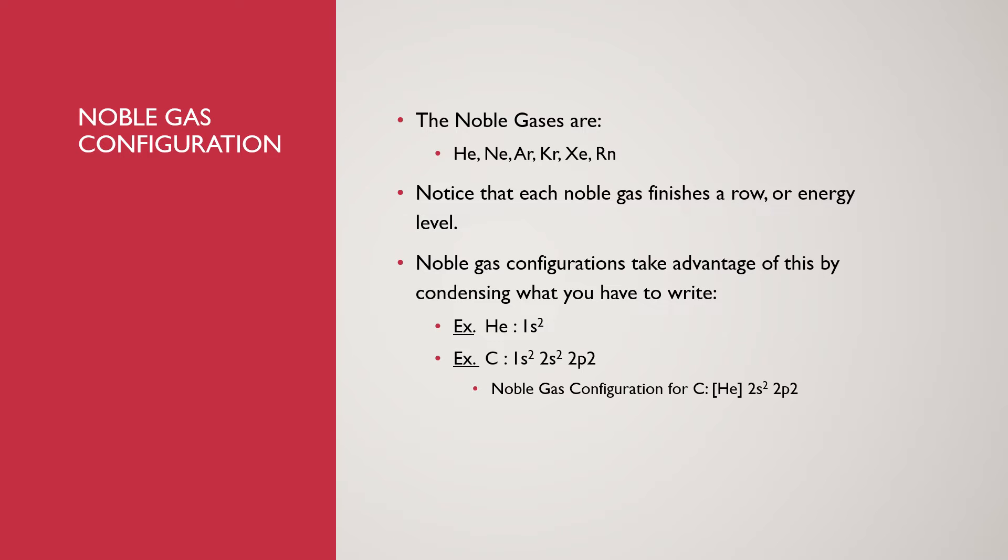So helium is 1s2, so instead of writing carbon 1s2, 2s2, 2p2, your noble gas configuration will be helium in brackets 2s2, 2p2. This one doesn't look a lot shorter, but it will help you a lot when you get to those d-block and f-block elements.